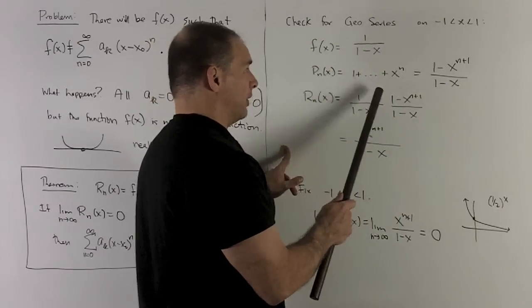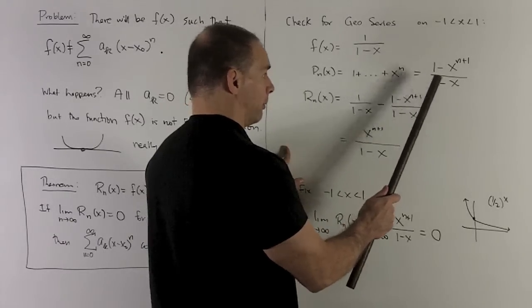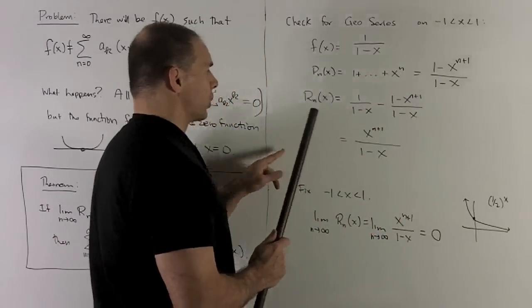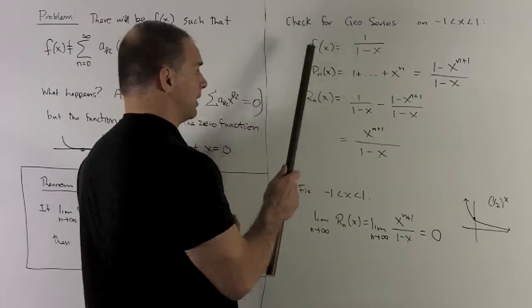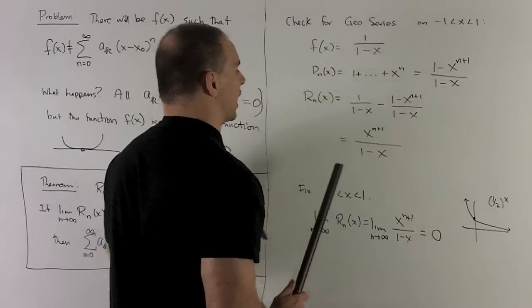And we can rewrite this as one minus x to the n plus one over one minus x. So our remainder is just going to be the difference of these two, and that's going to give me x raised to the n plus one over one minus x.